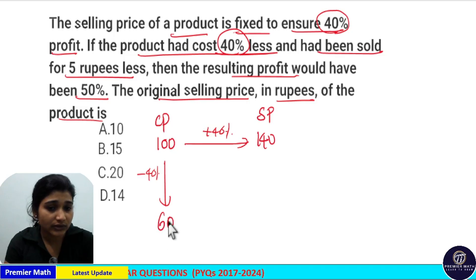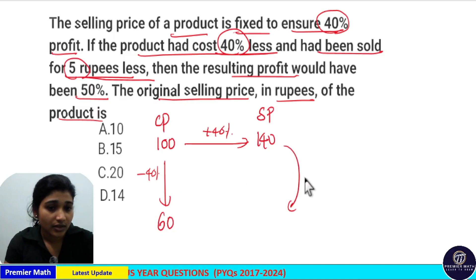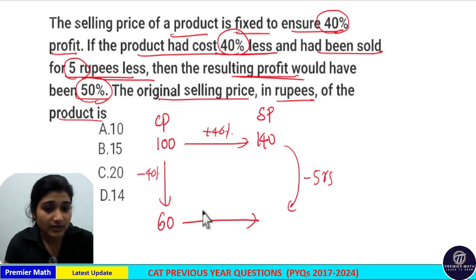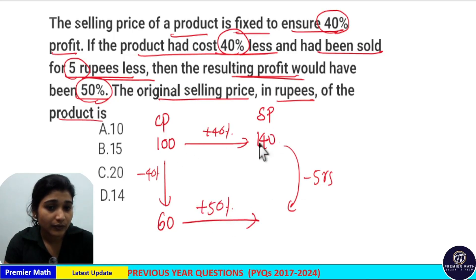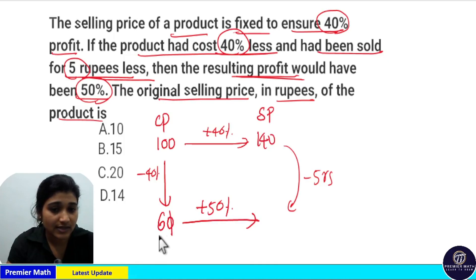So if the product had cost 60 rupees and had been sold for 5 rupees less, the resulting profit would have been 50%. 50% profit means 10% of 60 is 6 rupees, then 50% is equal to 5 into 6 which is 30 rupees.